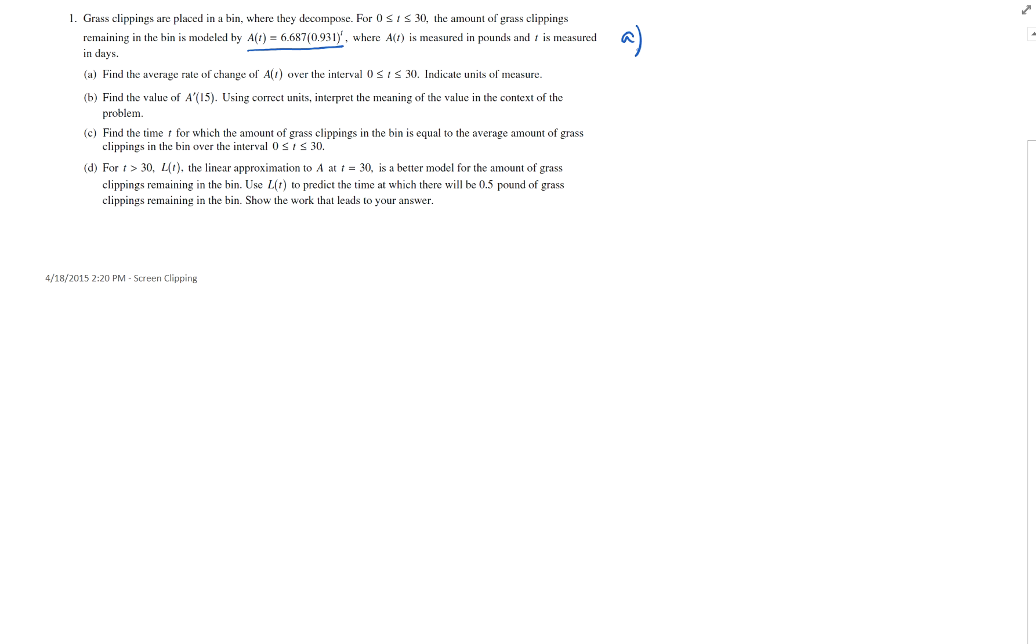This is not the average value, but the average rate of change from zero to 30. So the average rate of change is A of 30 minus A of zero divided by 30 minus zero. It's the slope of the secant line. That's the average rate of change.